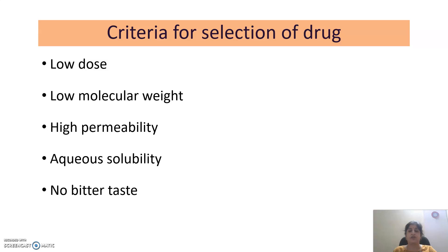The criteria for selection of drug through the Buccal Drug Delivery System are as follows. The main criterion is that the dose of the drug should be low — if the dose is high, the dosage form will be of larger size, which will be inconvenient for the patient to keep in the oral cavity for a longer period of time. The drug should also have a low molecular weight, preferably less than 400 dalton, and ideally around 100 dalton.